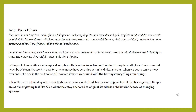In the Pool of Tears, Alice's attempts at simple multiplication leave her confounded. In regular math, 4 times 6 would never be 13. We work in base 10, meaning we have digits 0 through 9, and when we get to 10, we move over and put a 1 in the next column. However, if you play around with base systems, things can change. While Alice was calculating in base 10, in this new crazy Wonderland her answers slipped into higher base systems. People are at risk of getting lost like Alice when they stay anchored to original standards or beliefs in the face of changing systems.